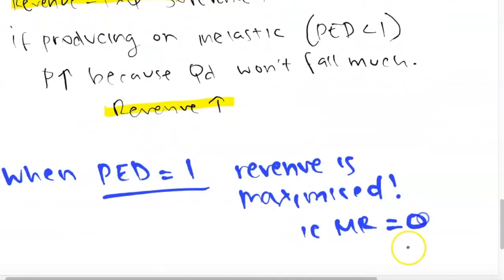Total revenue is maximized when PED equals 1 — when it is unitary elastic. This connects to the point where MR equals zero, which is where total revenue is maximized. When the demand curve intersects the x-axis, that is also when PED equals 1, and at unitary elasticity any change in price is offset proportionally by a change in quantity, so revenue does not change. More on this will be covered in Theory of the Firm.